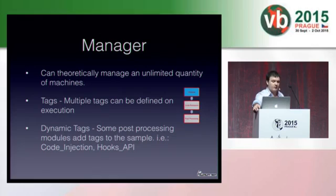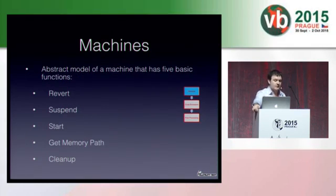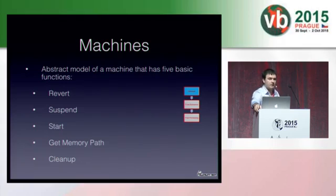The manager is the core of Volatility Bot. The manager executes the automatic extraction as well as the post-processing modules. This module also controls the associated machines' activity to streamline the workflow. The machines are an abstract design of a research machine, containing five functions. Currently VMware and VirtualBox are supported. Machines are grouped in machine resource pools, and depending on configuration, each sample can be submitted to multiple pools — for example, Windows XP and Windows 7 64-bit pools.